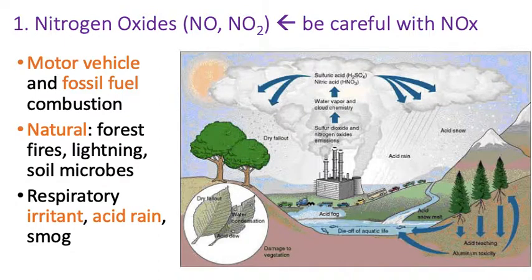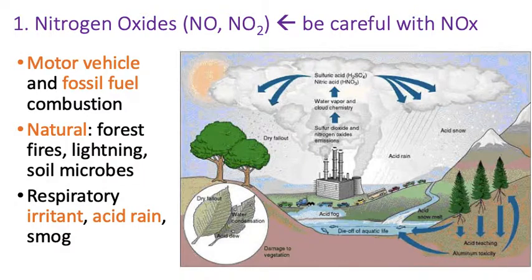Be careful — you want to make sure you identify them as NO or NO2. They tend to come from motor vehicle or fossil fuel combustion, so a lot of anthropogenic influences. There are also some natural influences: forest fires, lightning, and soil microbes. So yes, we know that they're given off naturally as well.